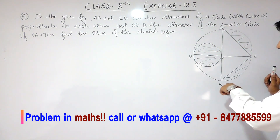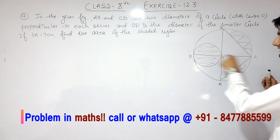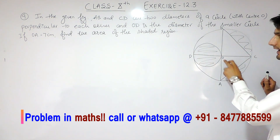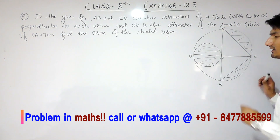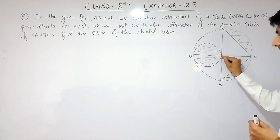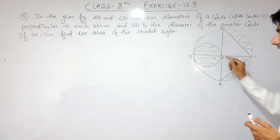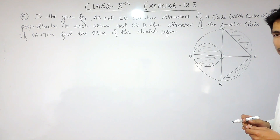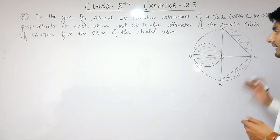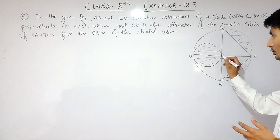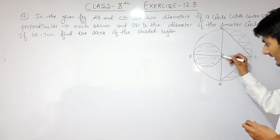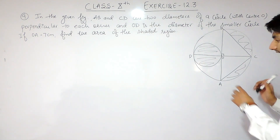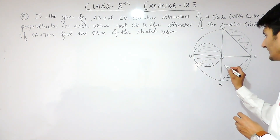AB and DC are two diameters intersecting each other at O. Because these two diameters are perpendicular to each other, the angle between them is 90°. O is the centre, and the length OA is given as 7cm, which means the radius of the bigger circle is 7cm.